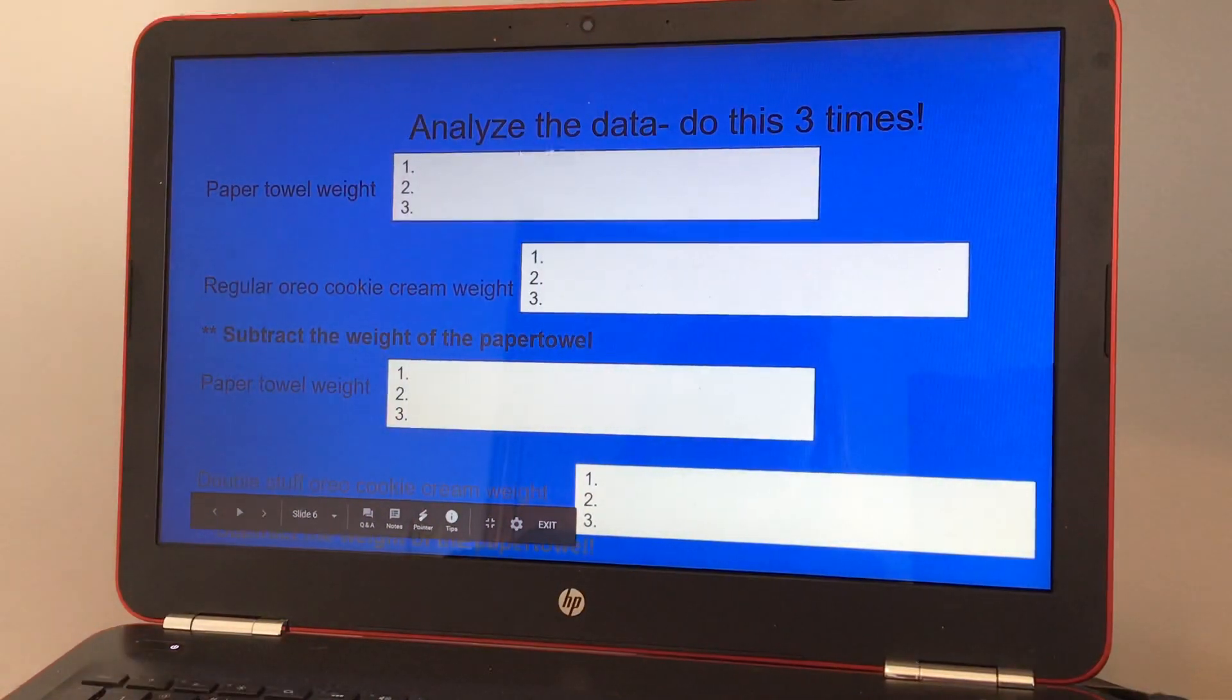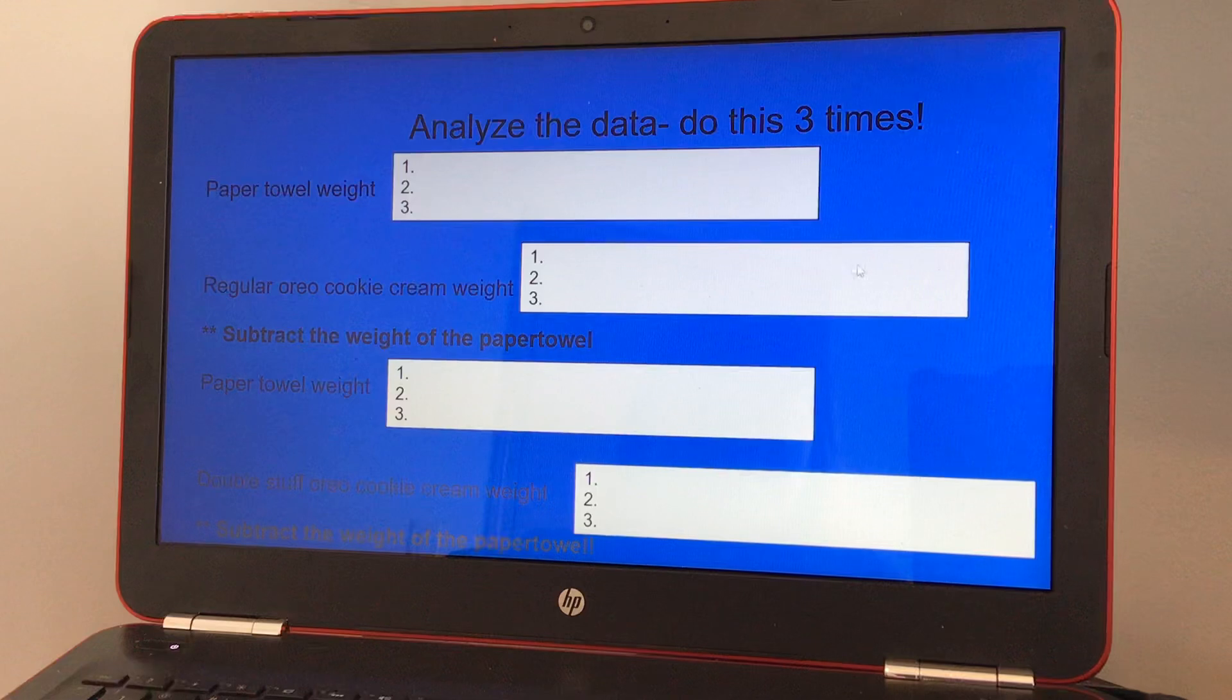So you can put your information here, the paper towel weight, the Oreo cookie weight, and don't forget to subtract the weight of the paper towel. So once you weigh the paper towel and you have the regular cookie cream, you're going to put that weight down but you're going to have to subtract what that paper towel weight is and that'll tell us how much the actual cream weighs.